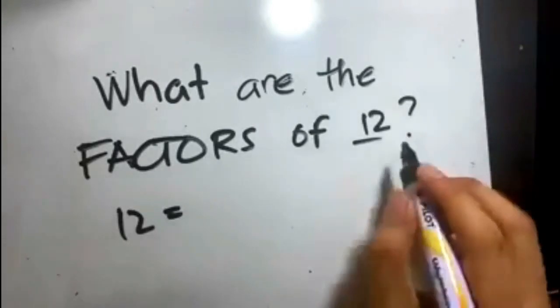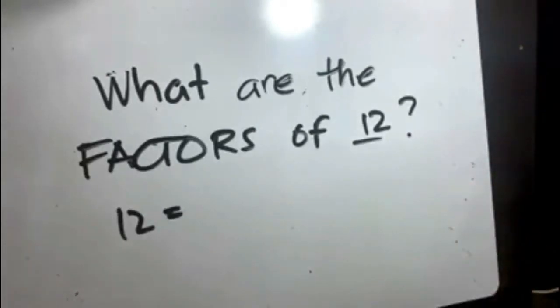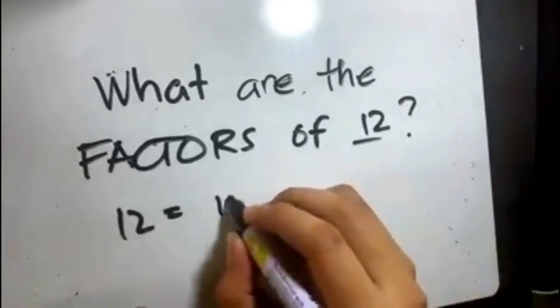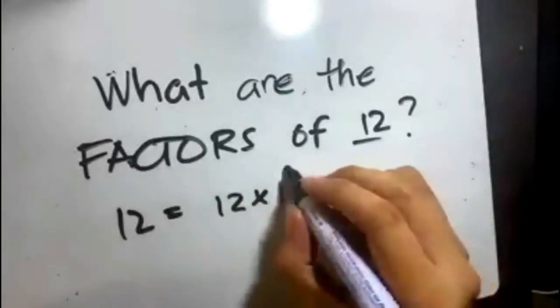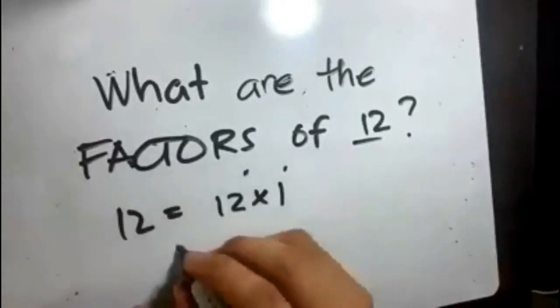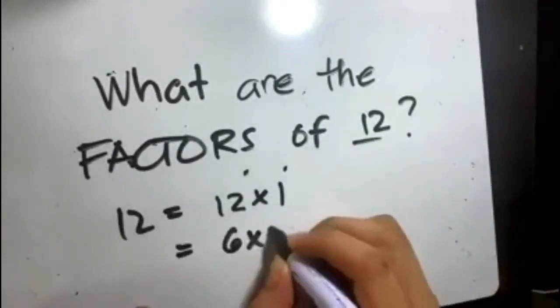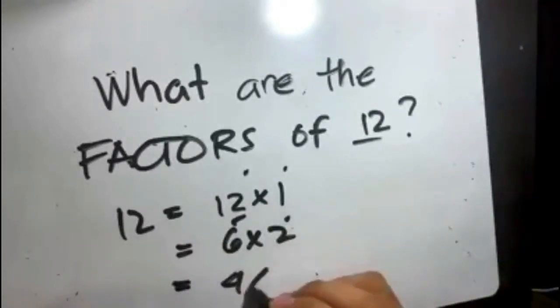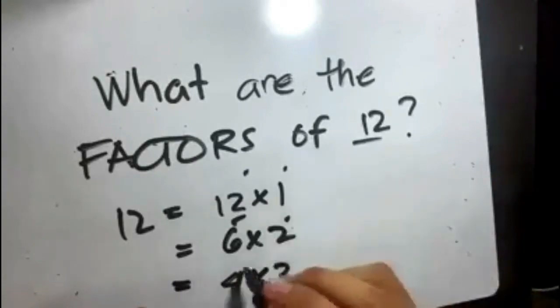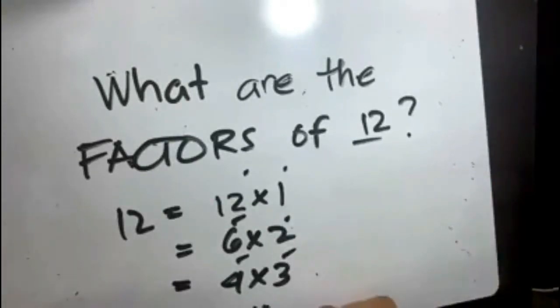What are these numbers that could give us a product of 12 when we multiply them? The basic one is 12 times 1, so we have determined 1 and 12 is a factor of 12. You can also have 6 times 2, so 2 and 6. You can also have 4 times 3, so 4 and 3.